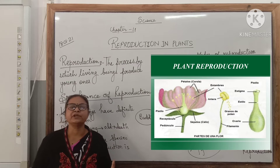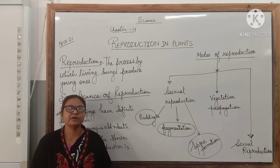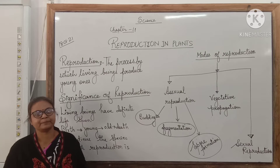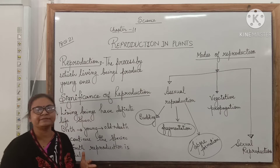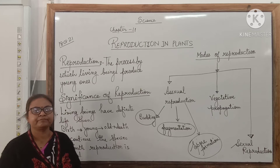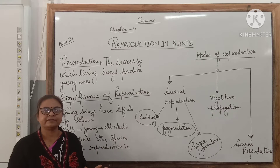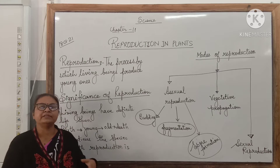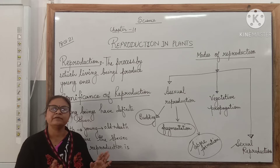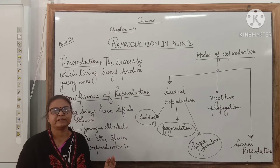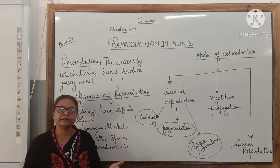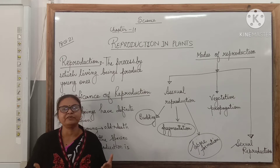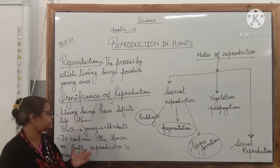Why is the process of reproduction so important? What will happen if an organism does not reproduce? We know that living organisms have a definite life span. After some years — or in some cases, days or weeks — animals and plants will all die. So what will happen? If all of them die, there will be no species left. To continue the species of living organisms on earth, reproduction is very important.